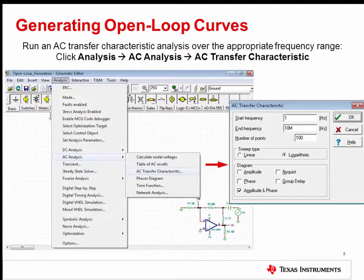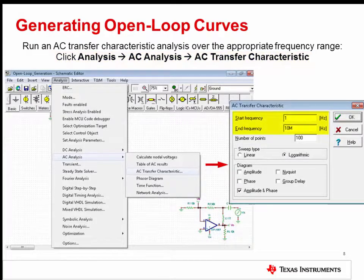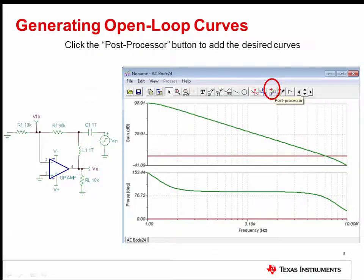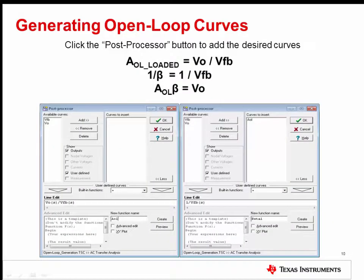Once you've verified the DC operating point of the circuit, perform an AC transfer characteristic analysis over the op-amp bandwidth. Click Analysis, AC Analysis, AC transfer characteristic to do this. Set the start and end frequencies, and then press OK to run the simulation. The results for the VO and VFB probes will be displayed after the simulation is complete. To add the desired curves for open loop analysis, click the Post Processor button in the result window. Then write the proper equations for AOL and 1 over beta in the line editor, name them, and then create the curves.